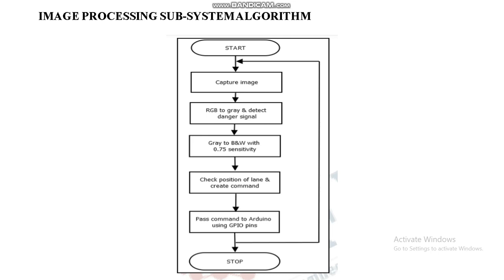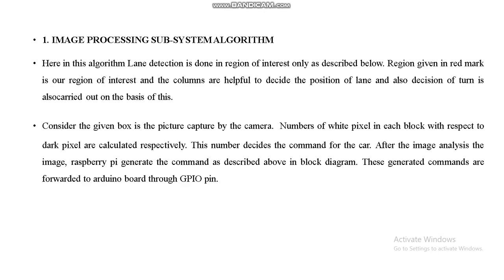In the image processing subsystem algorithm, the camera starts and captures an image. Those images are converted into RGB, then to grayscale, and then grayscale is converted to black-and-white. We get sensitivity from the layers, then check the position of the lane and create a command using the default command settings. The command is passed to Arduino using GPIO pins to control the motors.